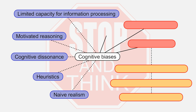Second, that other rational social perceivers will generally share my reactions, behaviors and opinions, provided that they have had access to the same information and have processed it in a reasonably thoughtful and open-minded fashion. Third, that the failure of a given individual or group to share my views arises from one of three possible sources: A) they may have been exposed to a different sample of information, in which case sharing information should lead to agreement; B) they may be lazy, irrational or otherwise unable to proceed from objective evidence to reasonable conclusions; or C) they may be biased by ideology, self-interest or some other distorting personal influence.